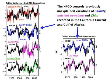To summarize: the NPGO controls previously unexplained variations of salinity, nutrient upwelling, and chlorophyll-A recorded in the California Current and Gulf of Alaska.